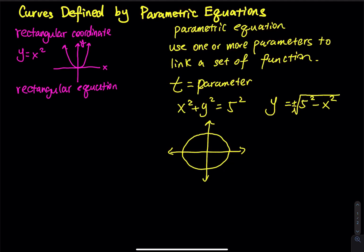The radius of this circle is equal to 5. On the graph, we mark 5 and negative 5 on both the x-axis and the y-axis.